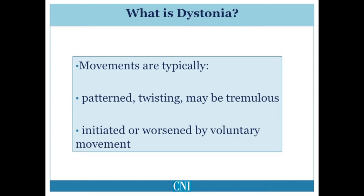The movements are typically twisting and turning movements or patterned movements. There may be tremulous or tremor-like movements superimposed, but usually the tremulous movements are irregular or jerky. Although some abnormal movements may persist at rest, the abnormal movements are generally worsened by voluntary movement. The patient may also have movement overflow, in which abnormal movements are triggered by voluntary movement of a distant part of the body not affected by dystonia. The sustained twisting movement may cause muscular pain and even secondary orthopedic injury to patients.